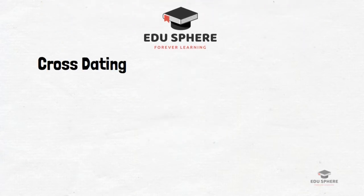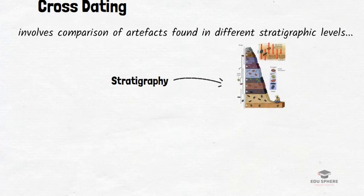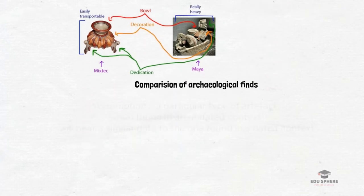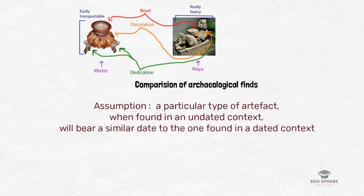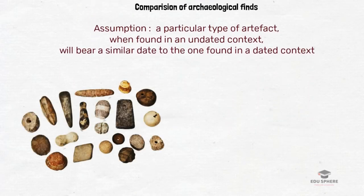First is cross dating. This is a simple method — it involves comparison of artifacts found in different stratigraphic levels. We have already discussed stratigraphy in the previous video. In this method, the age of archaeological finds or remains are compared with other finds or remains which sometimes have known dates. This method is based on the assumption that a particular type of artifact, for example a sword, when found in an undated context will bear a similar date to one found in a dated context.